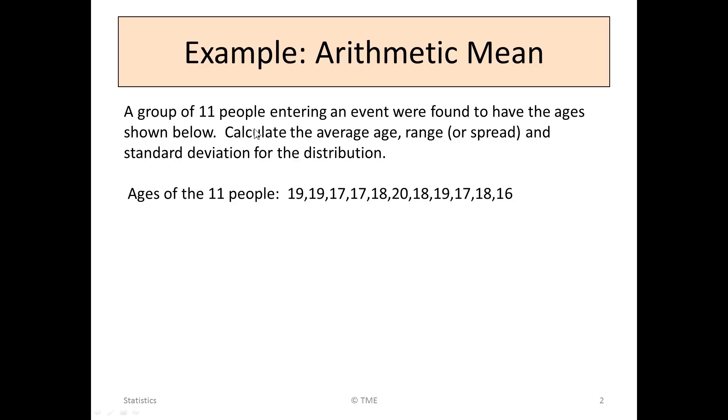A group of 11 people entering an event were found to have the ages shown below: 19, 19, 17, 17, etc. We are asked to calculate the average age, the range or spread of ages, and the standard deviation for the distribution for this particular group here.